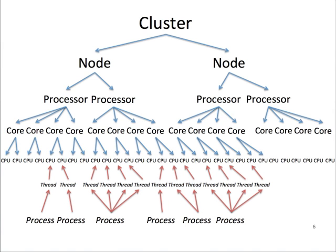This last slide summarizes the concepts in this video. Starting from the top, the cluster consists of multiple nodes. Each node has two processors on BioWolf. Each processor can have multiple cores. Each core has two CPUs. And then from the bottom up, programs executing as processes can have single threads of execution, or they can be multi-threaded. For optimal execution of a program, you always want to run a single thread on a single CPU. This is the end of our Basic Concepts and Terminology video.